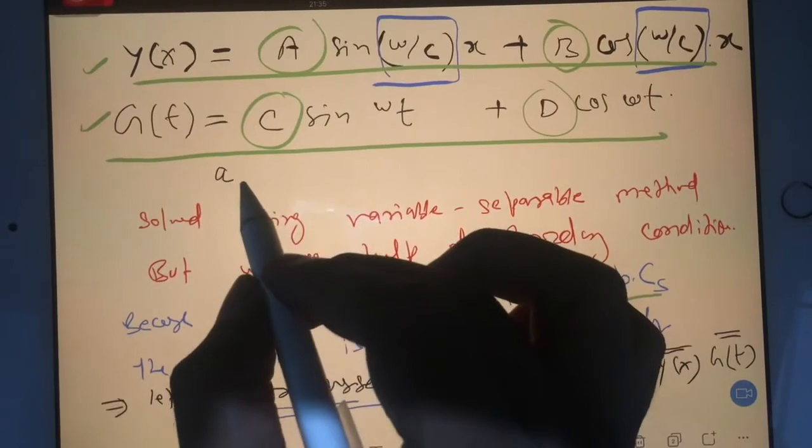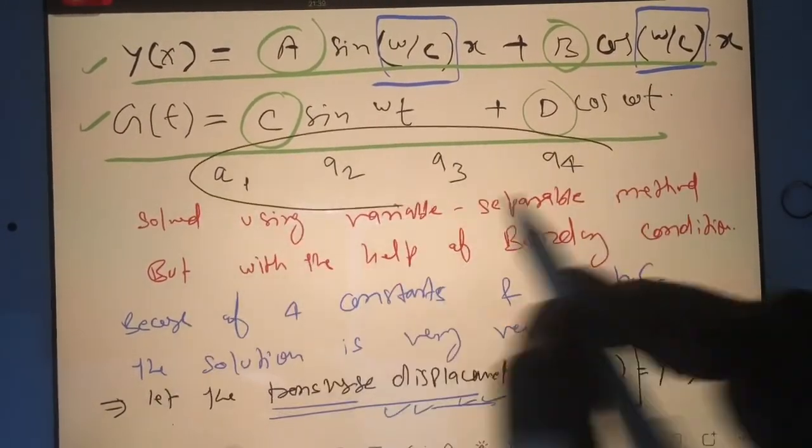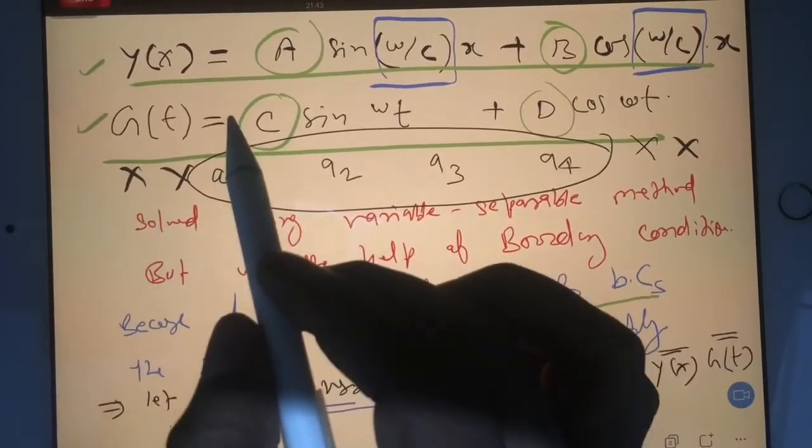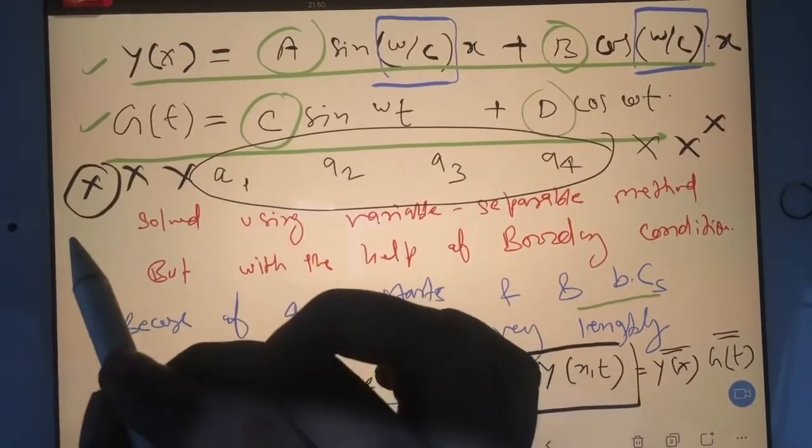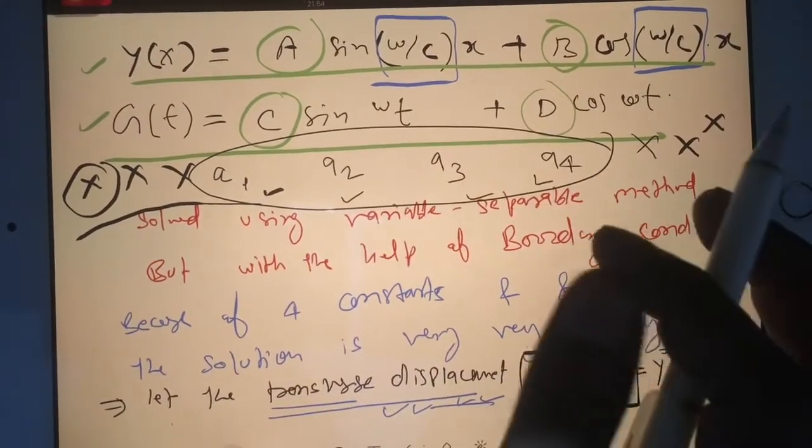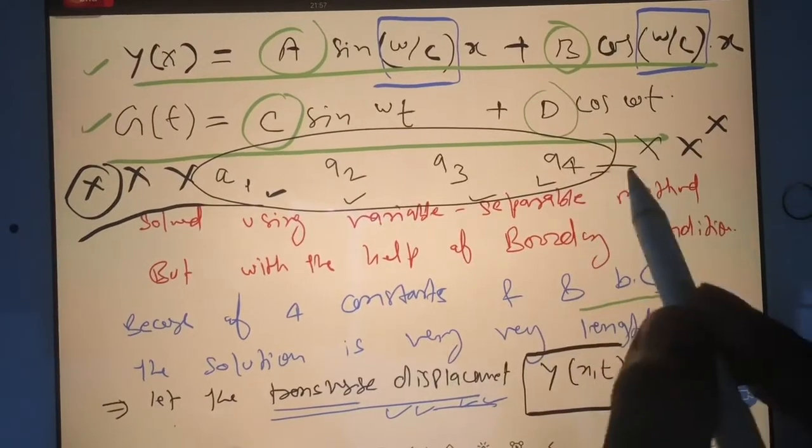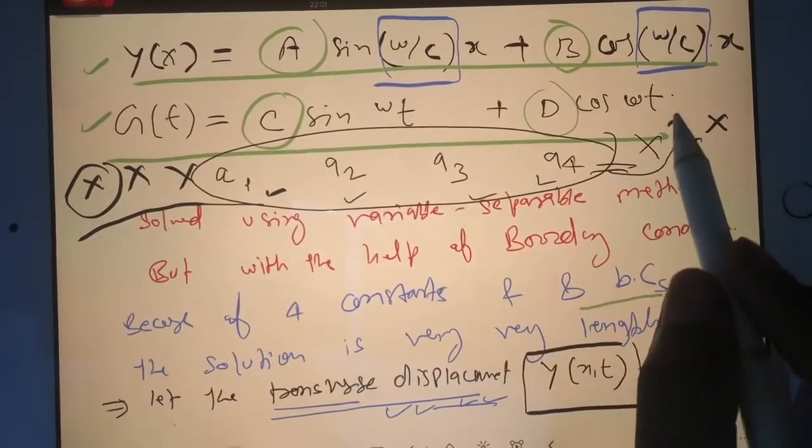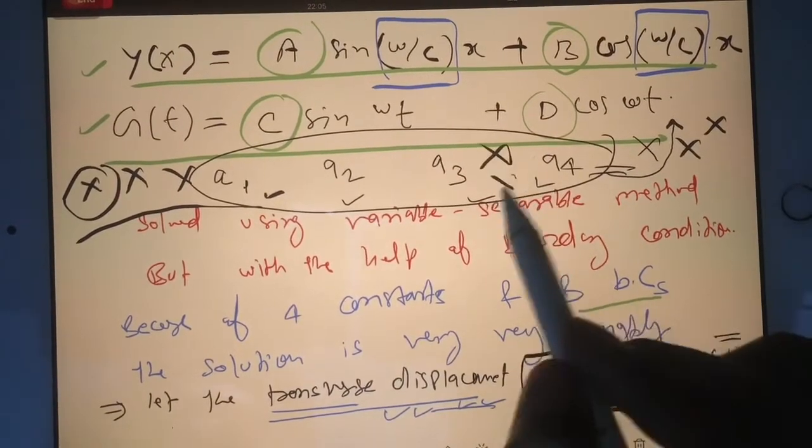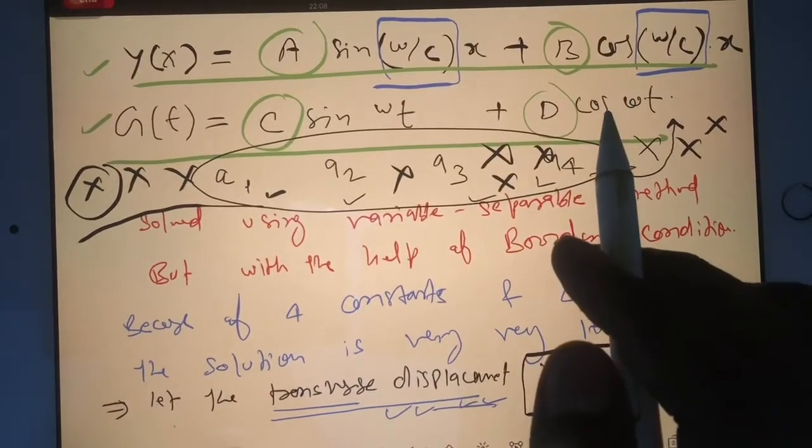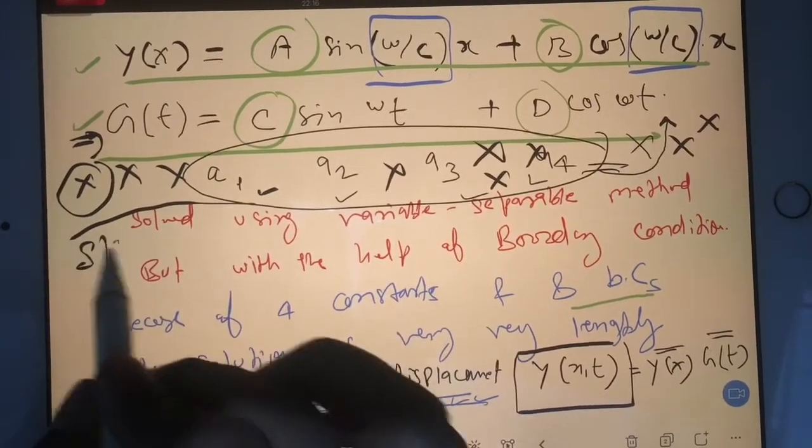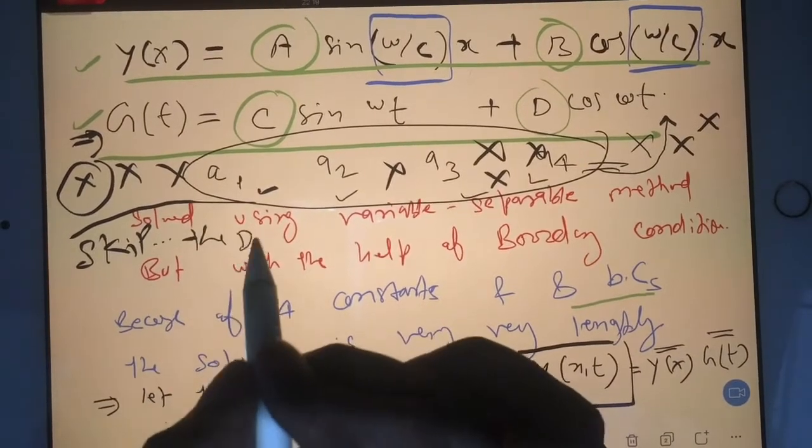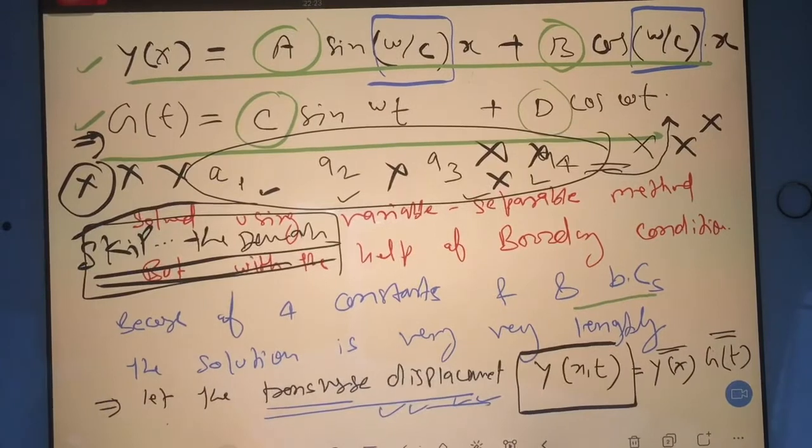That equation I'm not writing because it's very lengthy and not advisable to go in that direction. Gate exam is more about the right direction, so I'm skipping this. These values A1, A2, A3, A4 we find out by using boundary conditions, then we go back to our partial differential equation and simplify. Now you write a big heading: skip the derivation. Then I'll change the page and you write here.